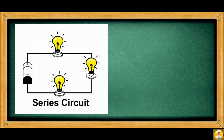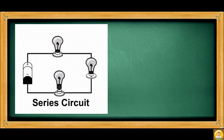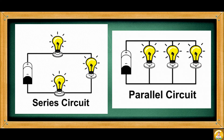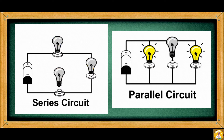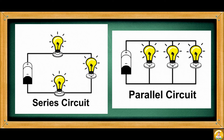If you turn off one bulb, what would happen? If you use a series circuit in your home, all the other bulbs will be turned off because there is only one path of electricity. Thus, the most appropriate circuit for homes is the parallel circuit. In such a circuit, each light and electrical device has its own path of electricity, so even if you turn off one of them, the others will still function.